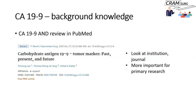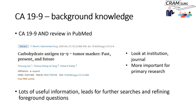Looking at the institution is really important when you're examining primary research where the paper is about patient-level data. It's not as important for systematic reviews and meta-analyses — the journal or institution may matter less, as long as the review is of decent quality. I read this paper and got lots of useful information about CA-19-9 that enhanced my background knowledge and made me more confident in discussing it.